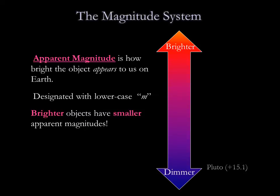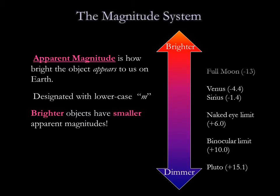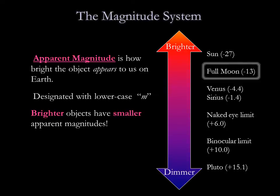The magnitude scale is such that a larger number for apparent magnitude means a dimmer apparent brightness. A star of apparent magnitude 4 appears dimmer in the sky than a star of apparent magnitude 1. Objects brighter than magnitude 0 go negative. For example, the full moon has an apparent magnitude of minus 13. The original magnitude scale was based on the human eye.